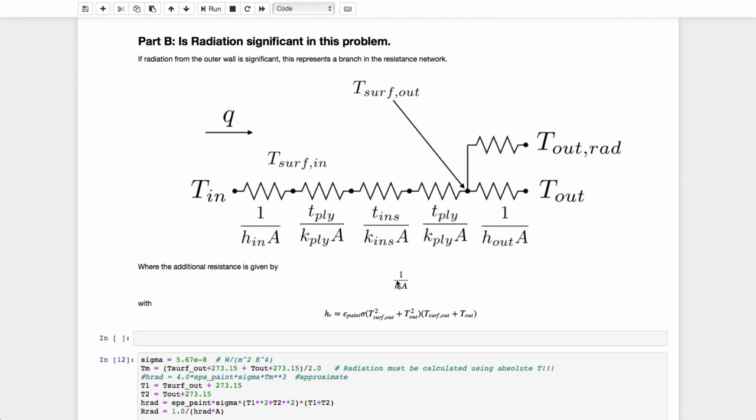The radiation resistance can be described in the resistance network using a heat transfer coefficient for radiation, as we saw in a previous video. The definition of that h_R would be given by this expression here. And notice now that the h_R is a function of that surface out temperature, and of course we must use Kelvin for these temperatures.